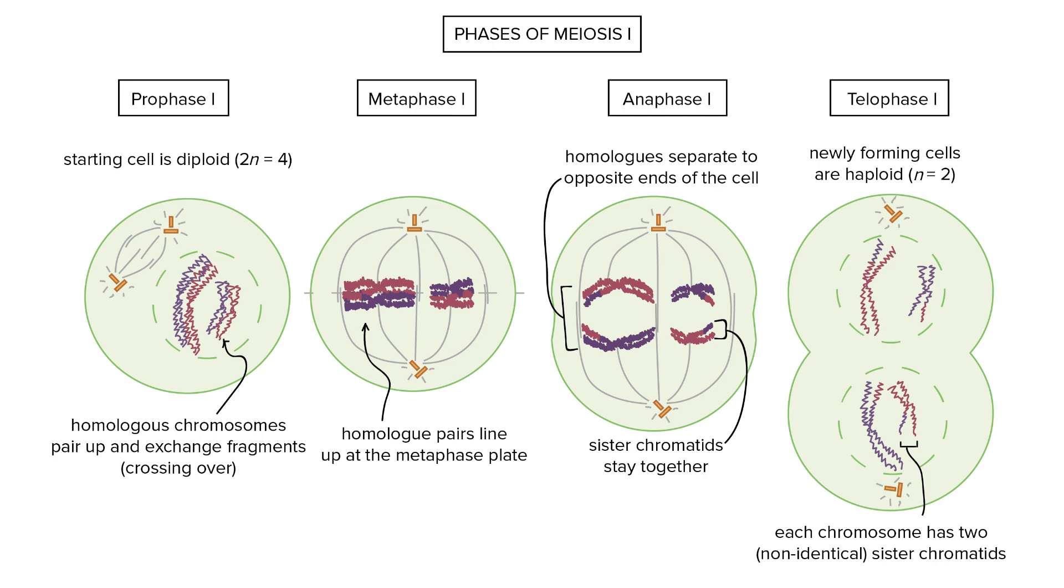The next phase is metaphase one. Each of the tetrads are going to line up in the middle of the cell or the cell's equator. In anaphase one, these tetrads are going to be separated and the chromosomes are going to be pulled apart to opposite ends of the cell by spindle fibers.